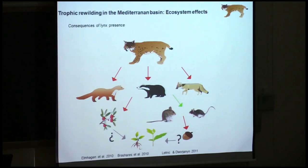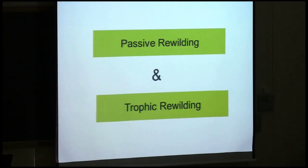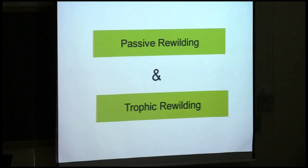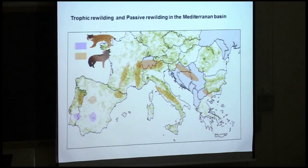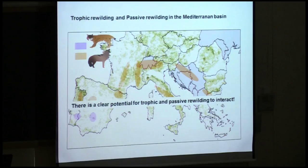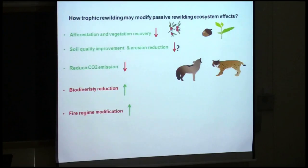Now that we have established the ecosystem effects of passive rewilding and the potential effects of trophic rewilding in the Mediterranean, I want to think about what the interactive effects of both might be when they happen together. Here you have the first map focused on the Mediterranean Basin: in violet you can see the expansion areas for the lynx and in orange the expansion areas for the wolves. There is clearly an overlap between trophic rewilding and passive rewilding.